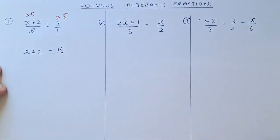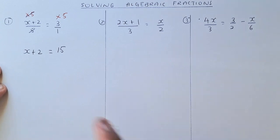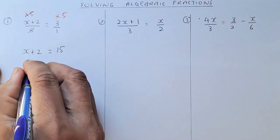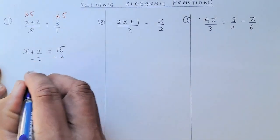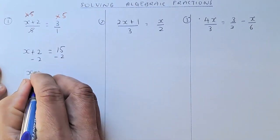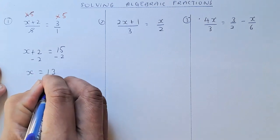Once you have done that, it's going to be easy. You minus 2 on both sides, so x equals to 13.